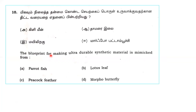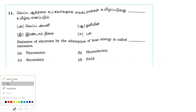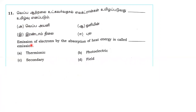Next question: the blueprint for making ultra-durable synthetic material is mimicked from nature. Following that, emission of electrons by the absorption of heat energy is called thermionic emission, as the electrons absorbed are thermionic electrons.